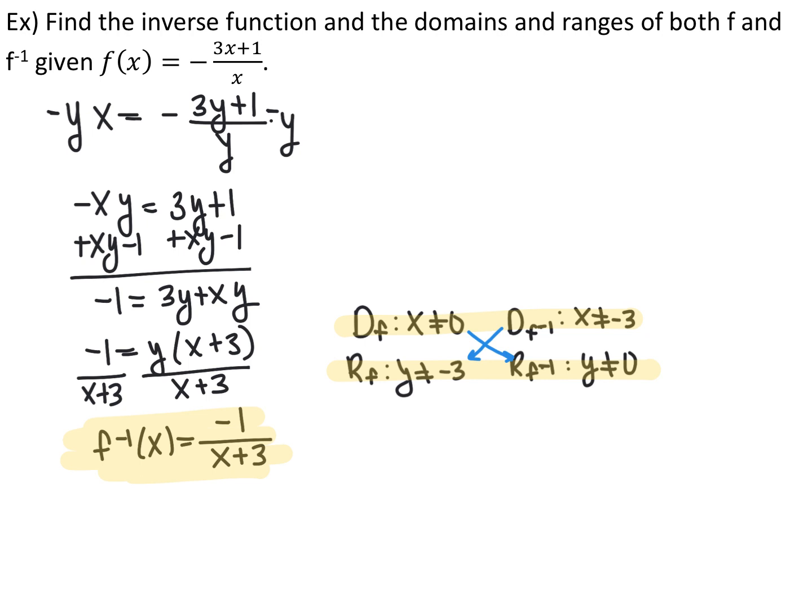To summarize: to verify two functions are inverses, compose the functions in both directions — they should both simplify down to x. To find a function's inverse, interchange x and y, solve for y, and label it as your inverse function.